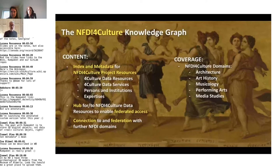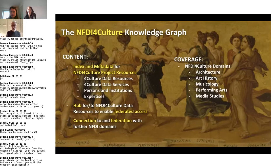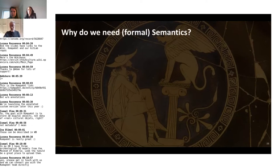What will be in this knowledge graph: all kinds of data resources from the project — data, services, information about persons involved, institutions, and expertise. We want to create a hub to enable federated access to all resources of more than 70 partner institutions, covering the entire domain: not only architecture but also art history, musicology, performing arts, and media studies. We also want to federate and connect to the other 30 NFDI domains. For that, this knowledge graph has to incorporate formal semantics, which enables semantic and exploratory search tools, intelligent recommendations, and question answering over federated research data.